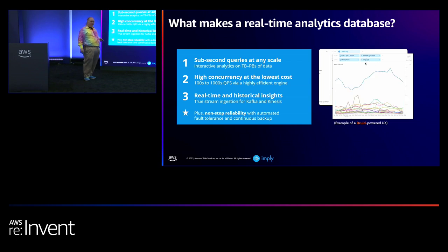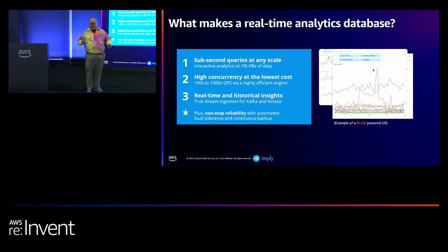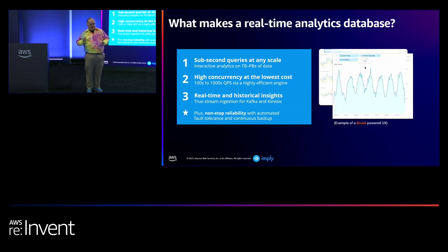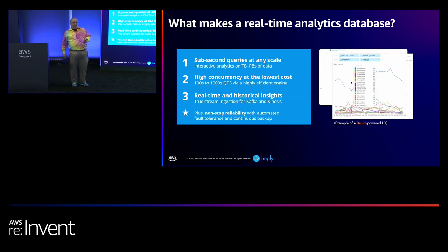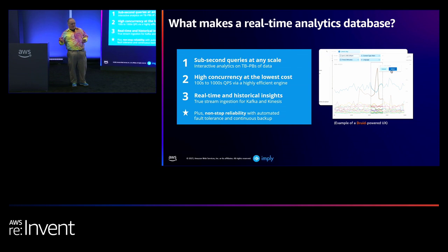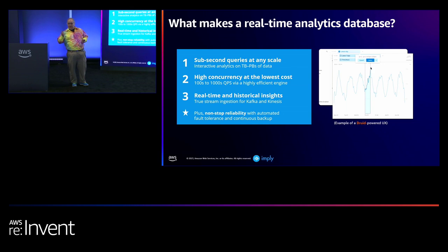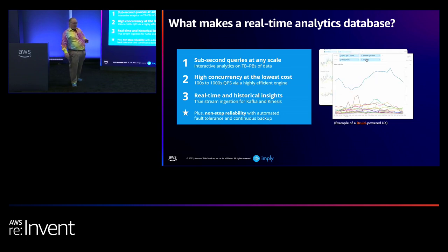Second is high concurrency. Technically, any database can be high concurrency if you throw enough resources at it. The point here is it's high concurrency without being very expensive. I can get 100-plus concurrent queries on a single server — not a huge server, something like an Amazon C6 extra large. And in a medium-sized cluster, thousands of concurrent queries at the same performance as one query.